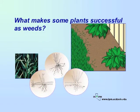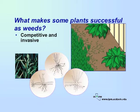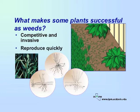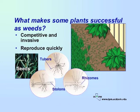The plants that become weeds are successful because they are very competitive and invasive. Watch out for invasions of lawn grasses and vigorously growing ground covers into areas of your landscape where you don't want them. Weeds reproduce quickly and spread by seed, or plant parts such as fleshy roots, tubers, or stolons, which are stems that creep along the ground, or rhizomes, which are underground stems.